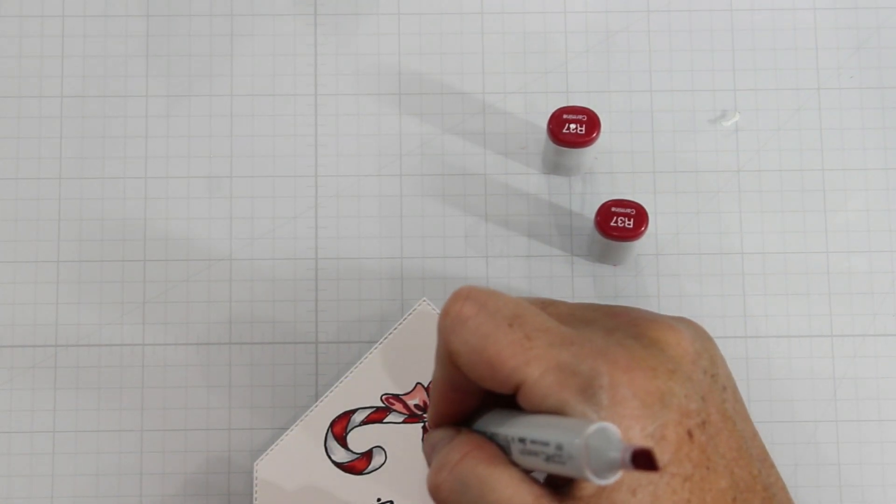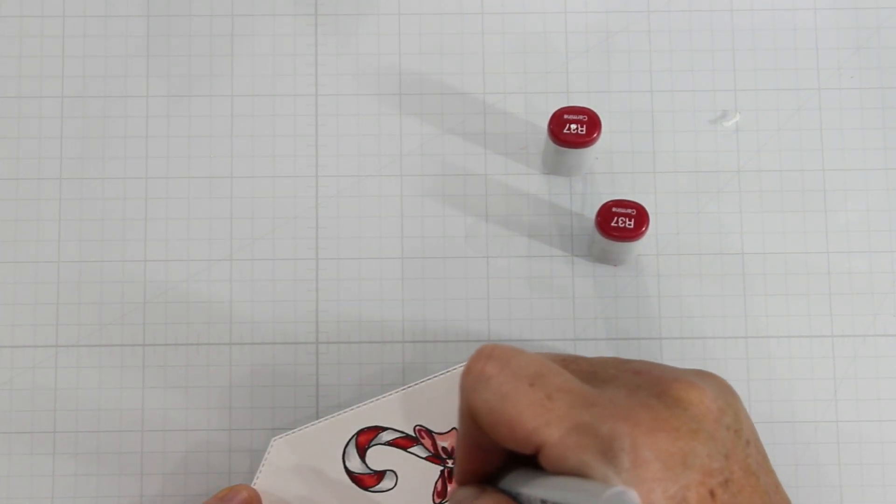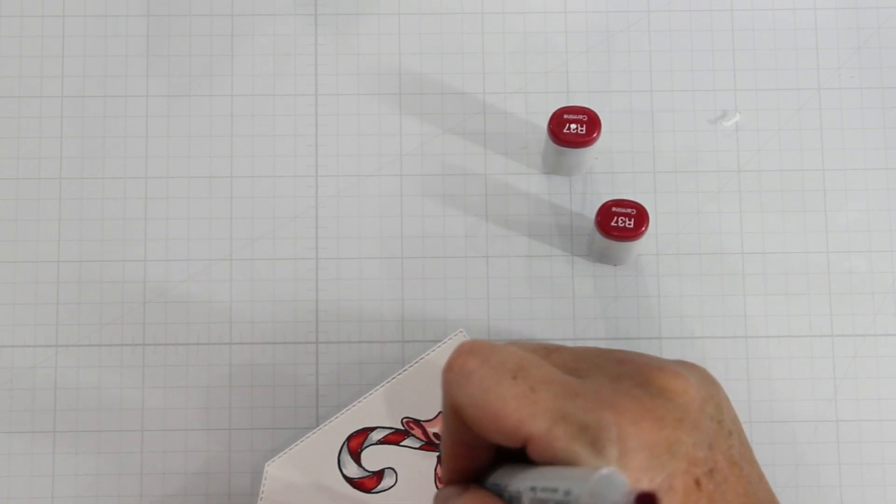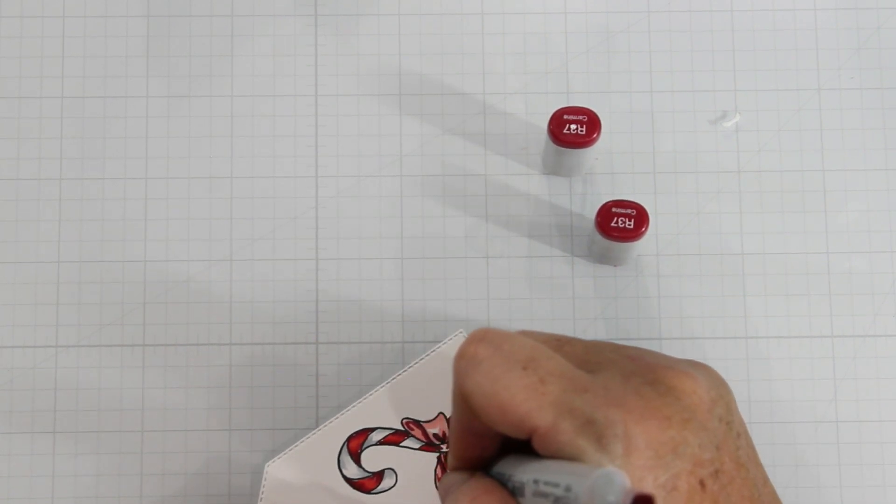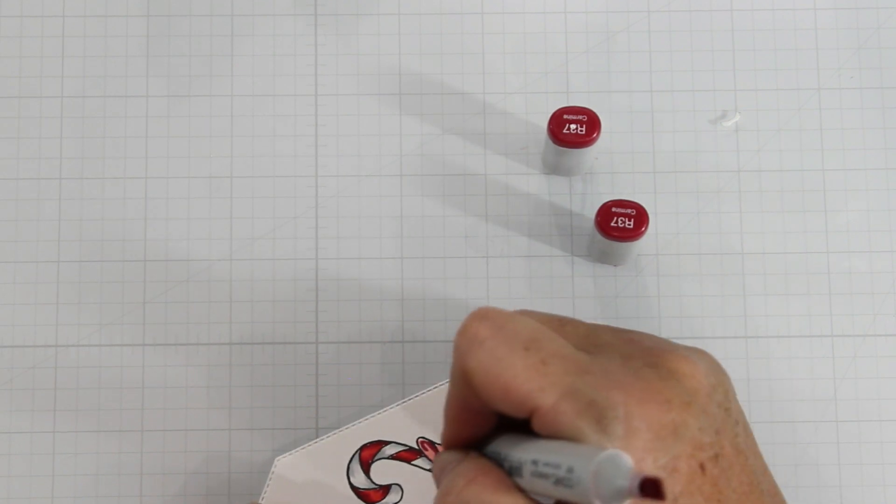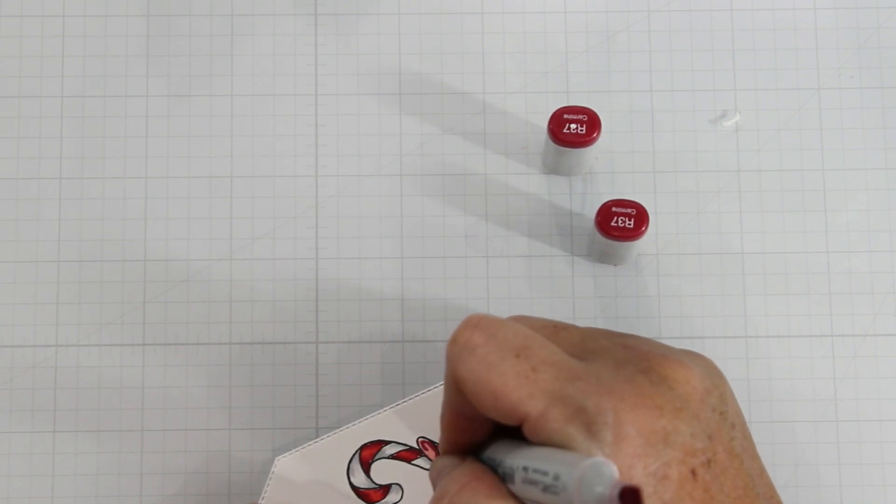So after that I put in my R37 and every place that I would have shadows like where the bow gathers and around the loops because the loops are going to be darker because it's behind everything I put in the R37.